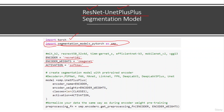We then create the segmentation model with pre-trained encoders. The model is defined as smp.UnetPlusPlus, using the UNet++ decoder. We pass the encoder (ResNet 101), the encoder weights, the number of classes in our dataset, and the activation function. That is the model defined using the ResNet encoder and UNet++ decoder.